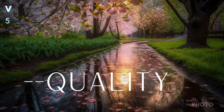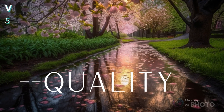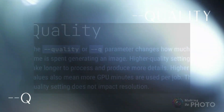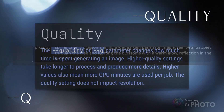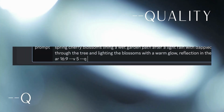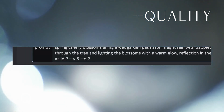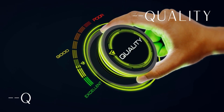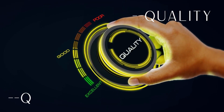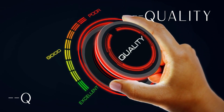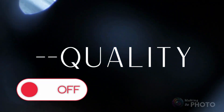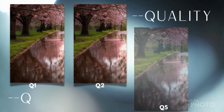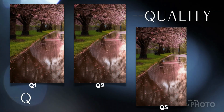With the quality parameter, you have the power to generate higher quality, more detailed images. Simply type --q followed by a number between 2 and 5. If you don't specify quality, the default is set to 1. Higher quality images will take longer to process and consume more GPU resources. Unfortunately, the quality parameter has been disabled in version 5. Hopefully we'll see it make a return in the future.